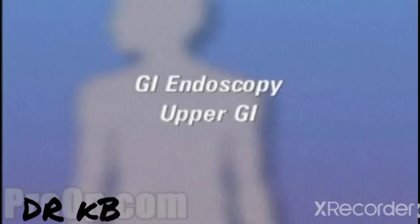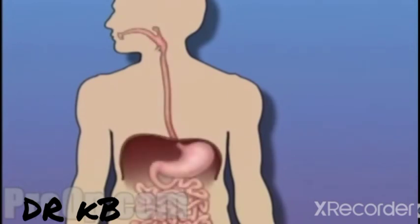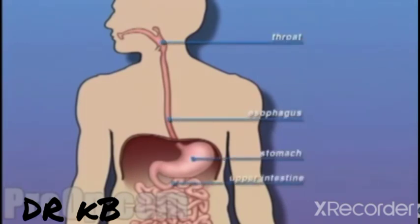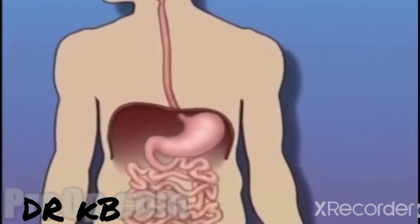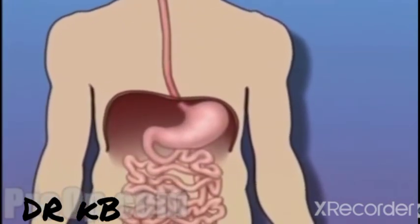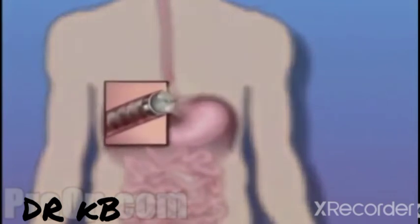Upper GI endoscopy — but what does that actually mean? An upper GI endoscopy is a diagnostic procedure used by your doctor to inspect the inside of your throat, esophagus, stomach, and upper intestine. While it's considered a surgical procedure, endoscopy does not involve an incision. Instead, your doctor will pass a flexible tube called an endoscope through your mouth and into your stomach and digestive tract.